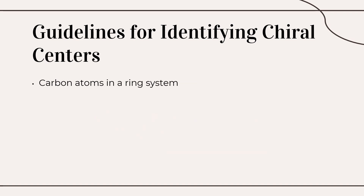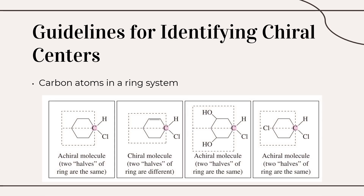Third, consider carbon atoms in a ring system. In one example, the carbon is not a chiral center, making the molecule achiral. In another example, the carbon is a chiral center because the two halves of the ring are different from each other, meaning there are four different groups of atoms bonded to that carbon, which makes the molecule chiral.